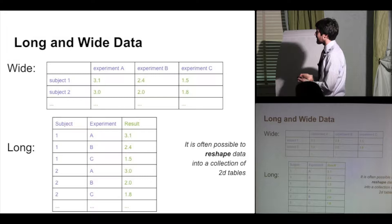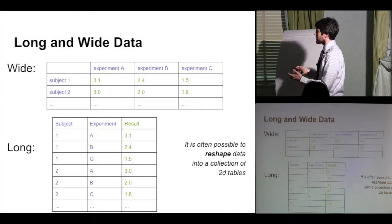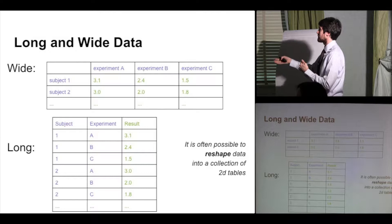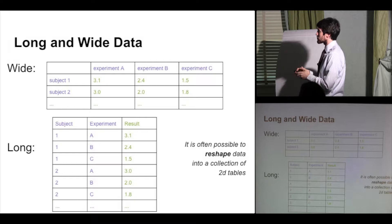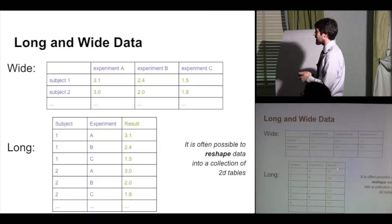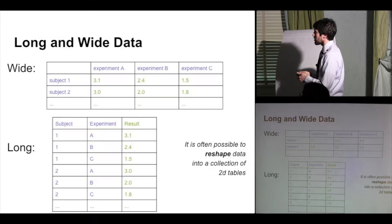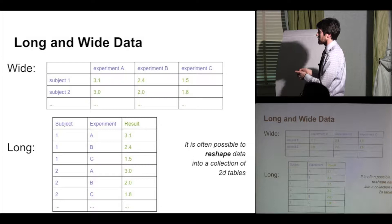Consider subjects and experiments where each subject does each experiment — a two-dimensional structure. A third dimension could be a parameter to the experiment. In the wide format you have a higher-dimensional table; to convert it to the long format, each dimension becomes a column and the value is another column. So for subject one, experiment one, parameter one, you have the result. A wide diversity of data can actually be expressed as a table, making it easier to express constraints between tables.